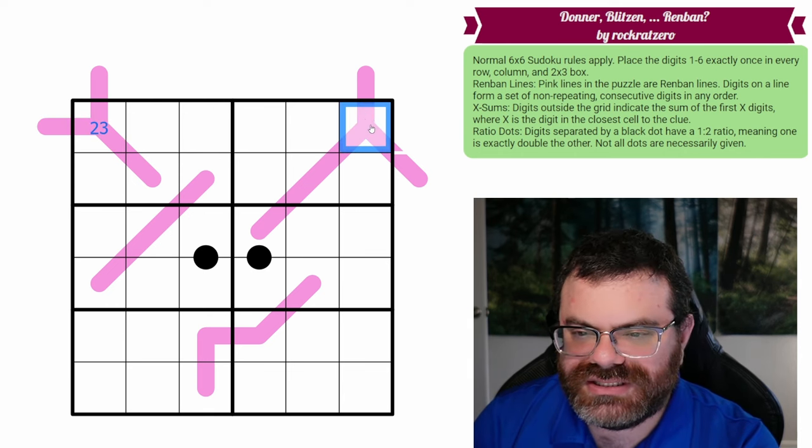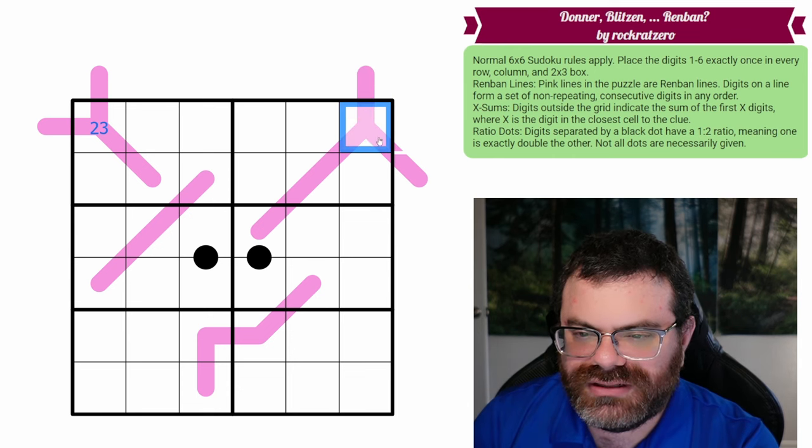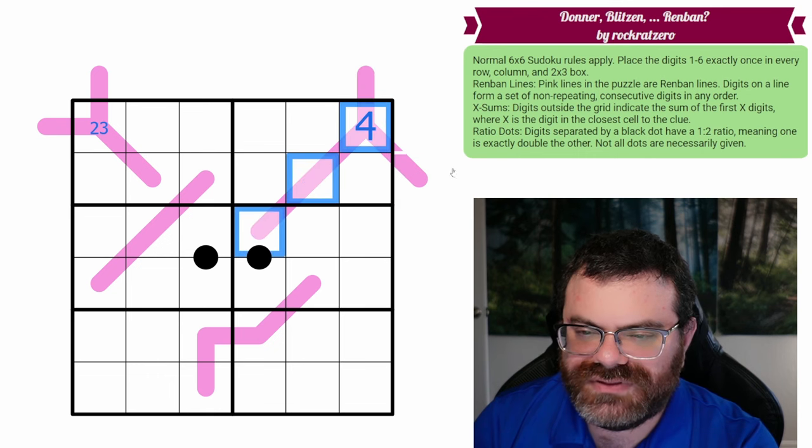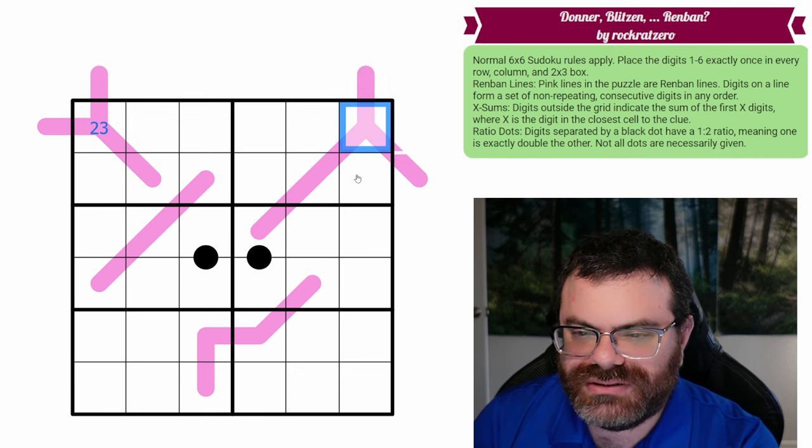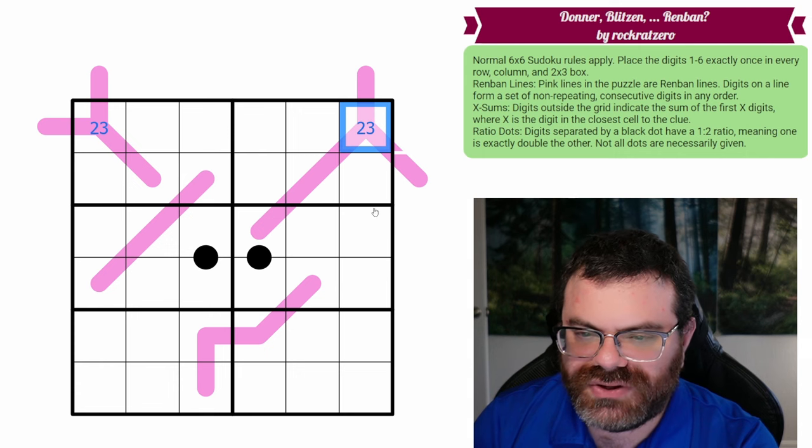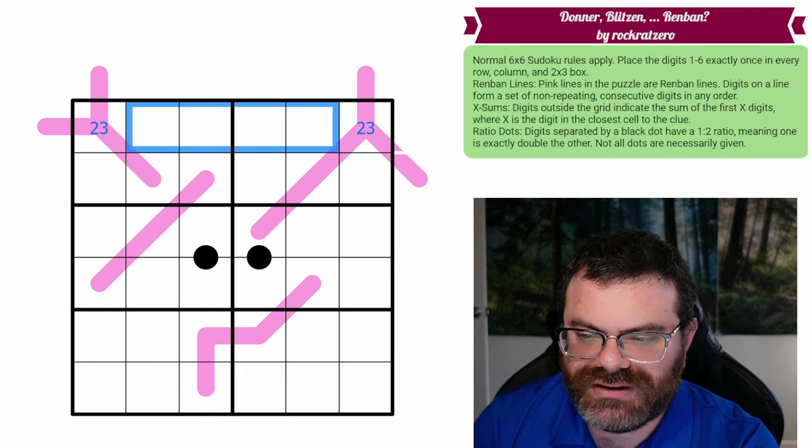And I think we can say the same thing here. I don't think it's any different, because we're thinking about this cell here. So if this was a 4, this would have to add to 10 at least, and this would be a 10 on a Renband. 4, 5, 6, 7, 10? No. So this is still, and this is not a 1, because this would have to be a 1 on the same Renband. So this is also 2 or 3. So we had a 2-3 pair there.